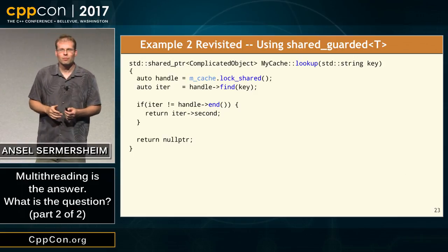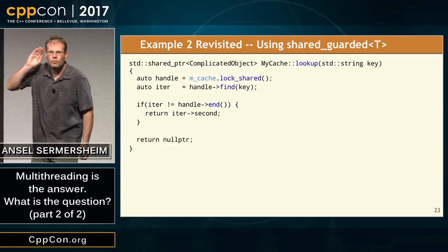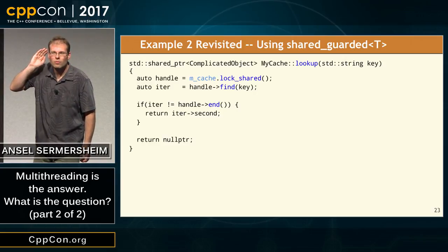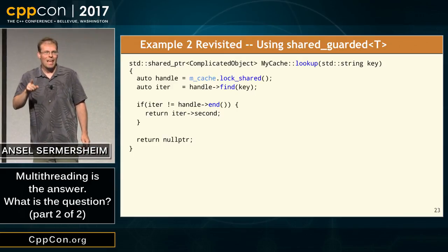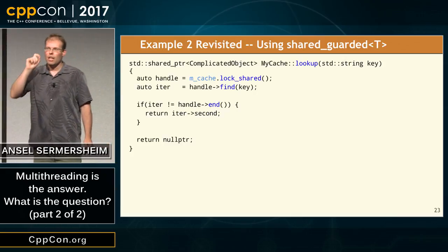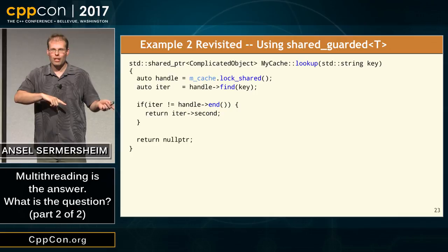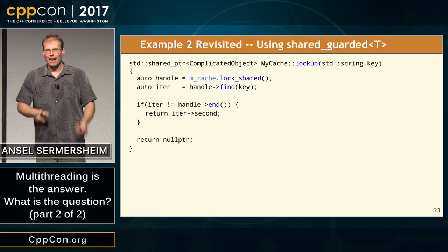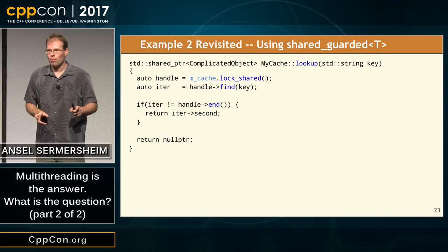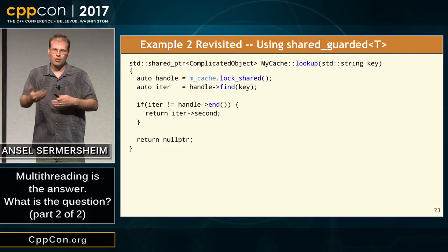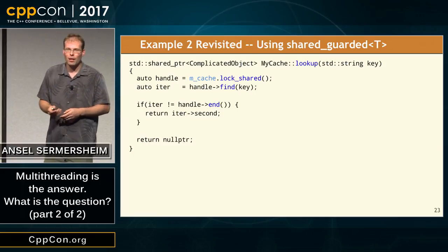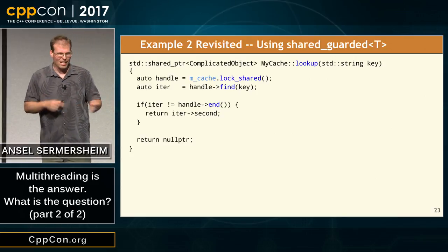A question was raised: could I have put const on lookup and mutable on the mutex? In this particular case, yes, that would have solved the problem. If I had made lookup a const method and made the mutex mutable, that would solve the problem. It would not solve the problem in the general case, however, because you're assuming there's only one piece of data in that class and you only have one mutex, so the constness of the method mirrors the constness of the data. But yes, that is one possible solution for that exact case.